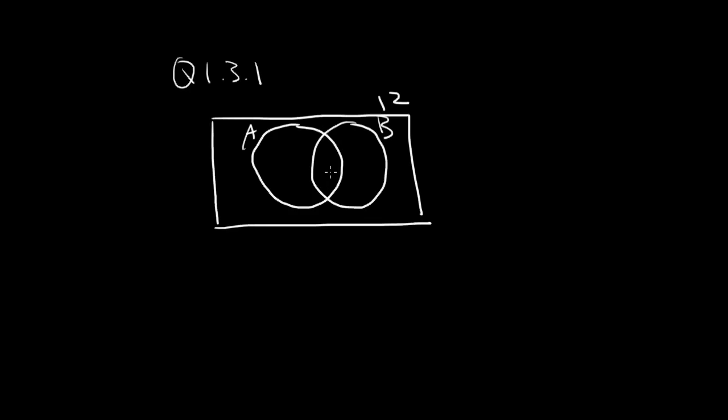So again we want to start from the middle, so here A intersect B, the middle area here is 3.